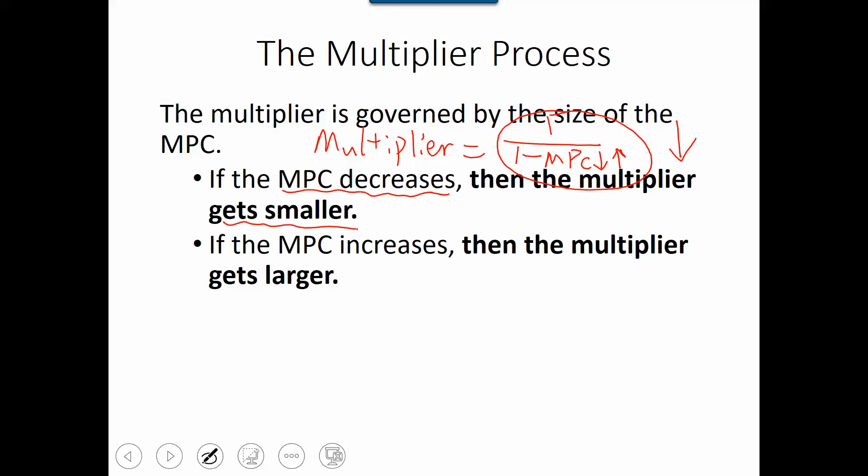So on the opposite side, if MPC increases, so let's look at this formula again. So if MPC increases, this whole denominator actually will decrease. So if this whole denominator decreases, the whole ratio actually will increase. So mathematically saying if MPC increases, it will end up, the multiplier will get larger as well.